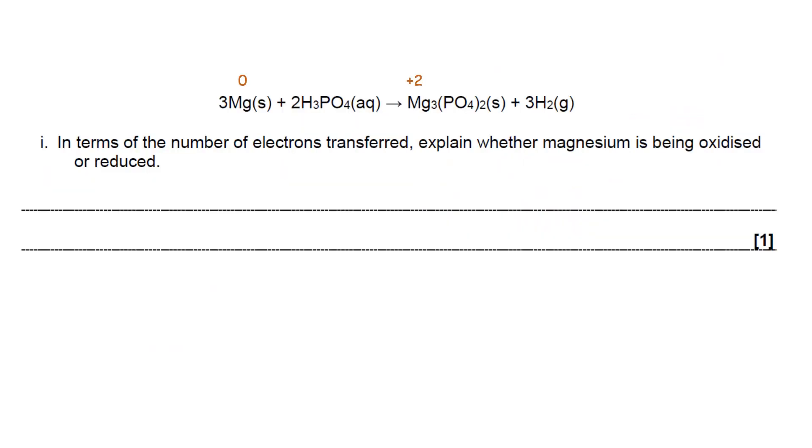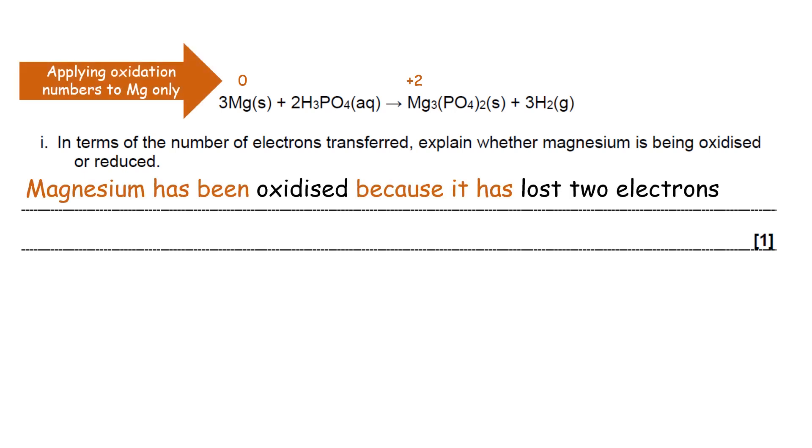So if you have a look at that, obviously, we're just going to focus on magnesium because that's what the question is asking us to do. It's been oxidized because the oxidation number has gone up. But in terms of the number of electrons transferred, it has lost two electrons.